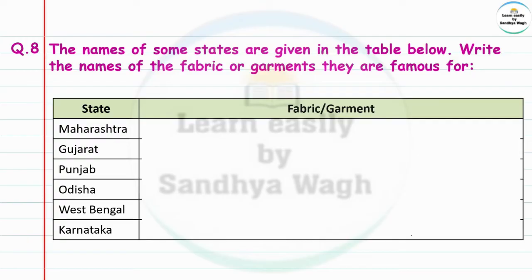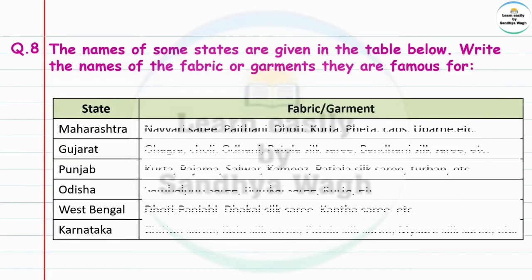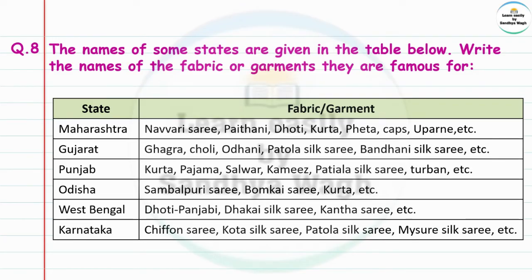Question 8: The names of some states are given in the table below — write the names of the fabric or garments they are famous for. Maharashtra is famous for navari sari, Paithani, dhoti, kurta, feta, caps, uparni, etc. Gujarat is famous for ghagra, choli, odhni, patola silk sari, and bandhej silk sari.